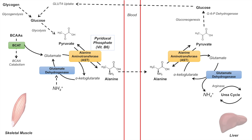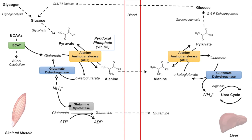There's another way the skeletal muscle can transport its nitrogenous waste to the liver: through glutamine synthesis. When there's a lot of ammonium produced in the skeletal muscle, that ammonium can be incorporated into glutamate with the enzyme glutamine synthetase, producing glutamine. This step from glutamate to glutamine requires an ATP. The glutamine is then transported in the blood and taken up by a liver hepatocyte, where it is metabolized by glutaminase, releasing ammonium and producing glutamate.